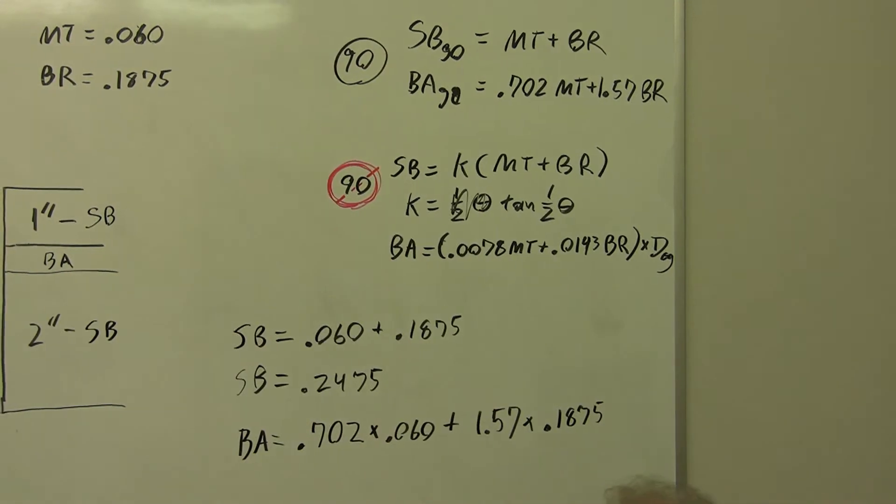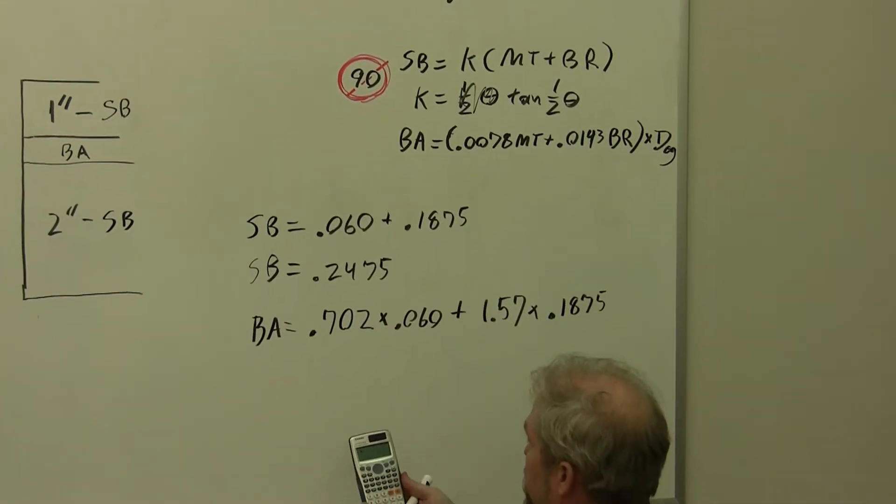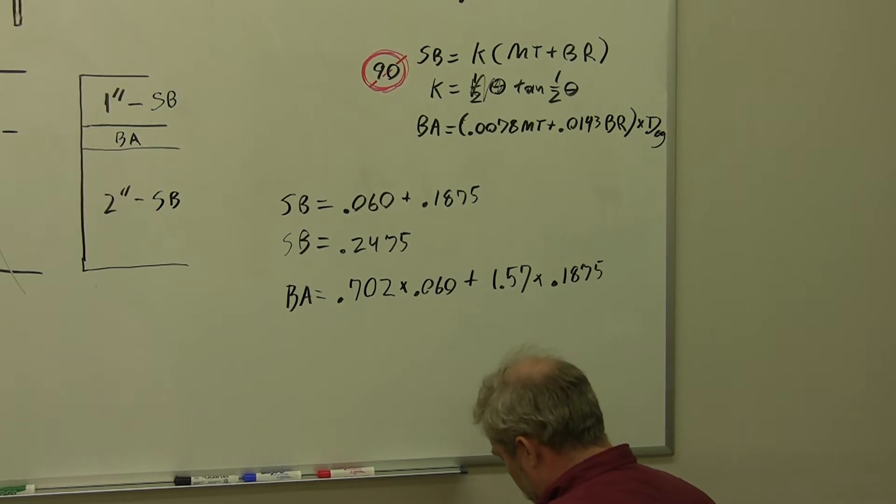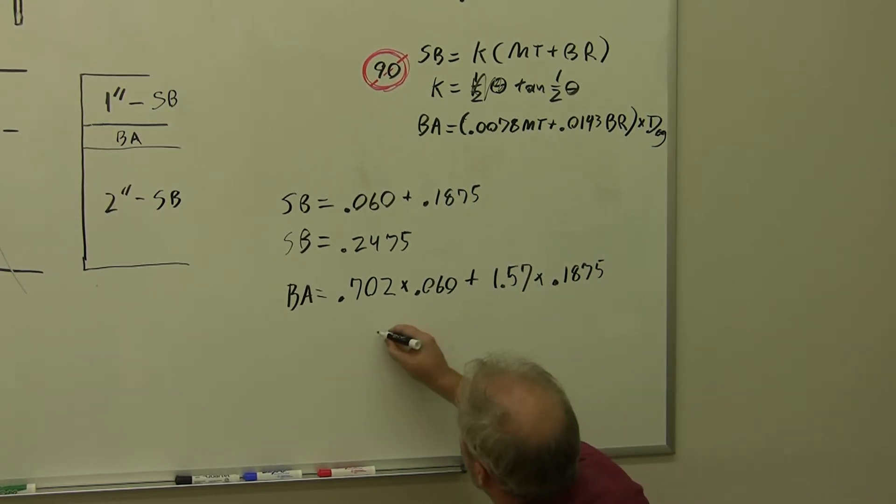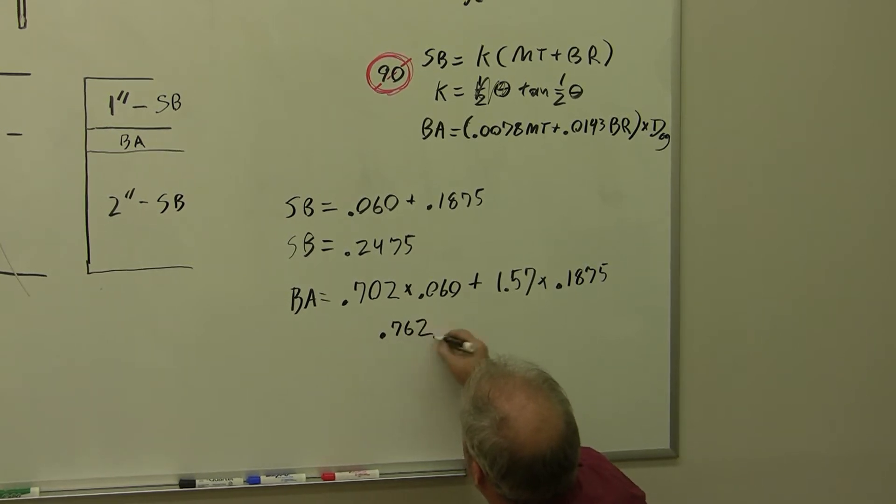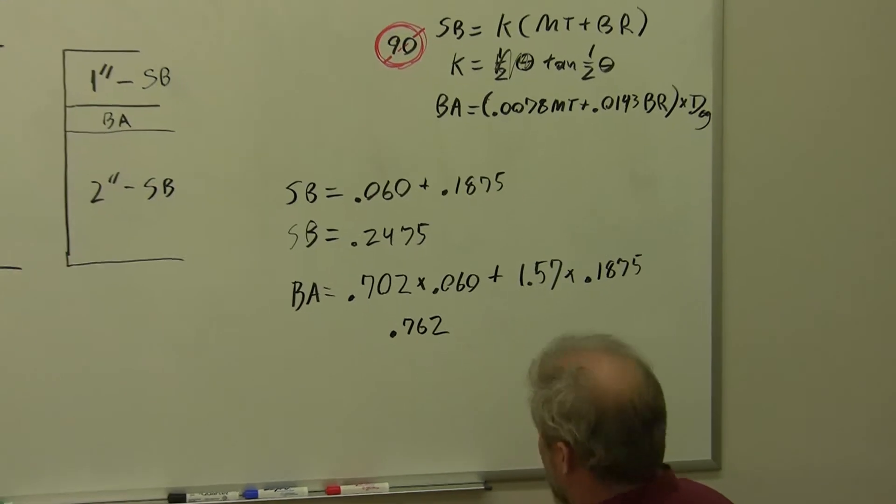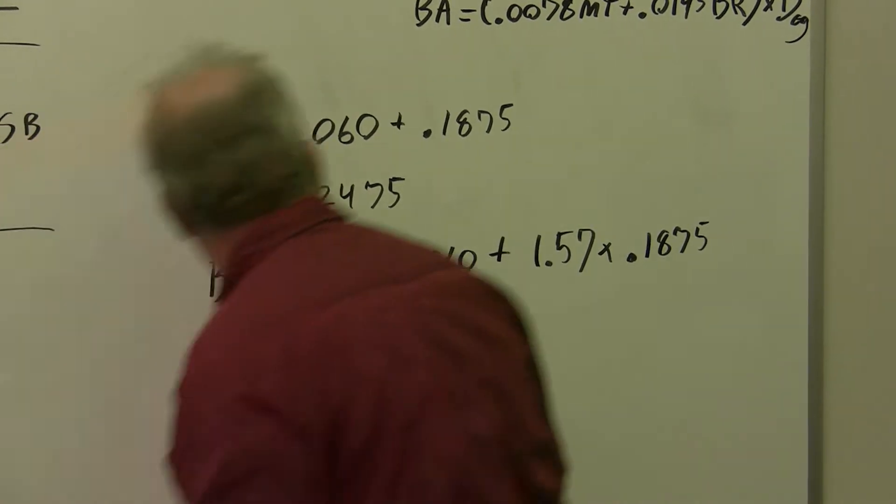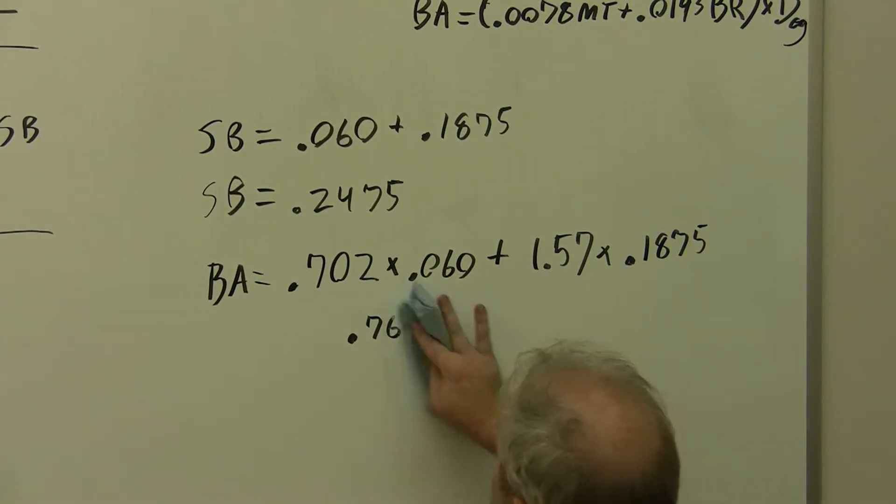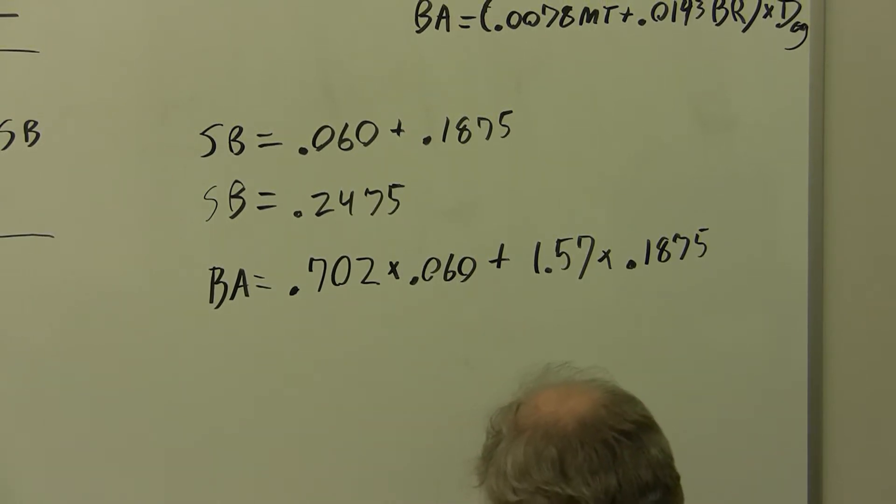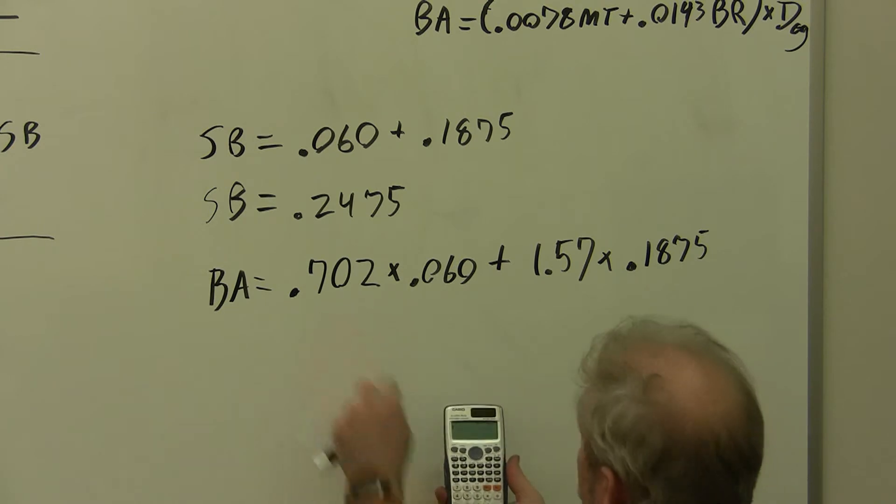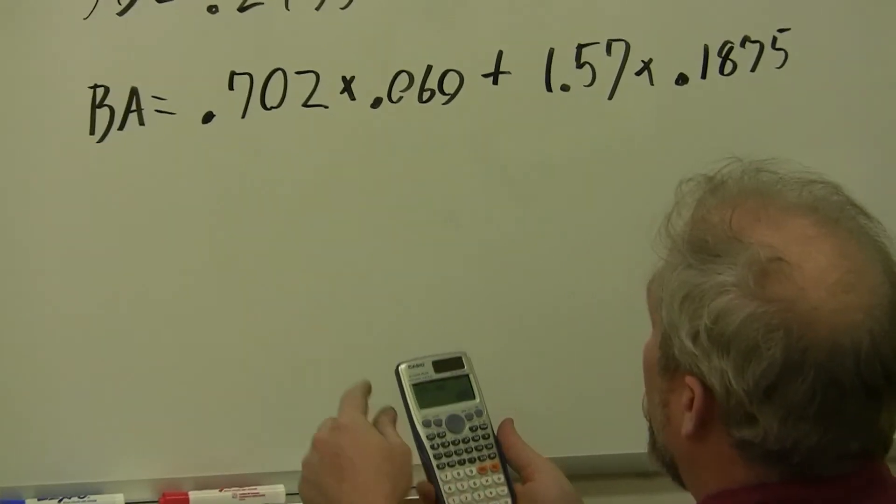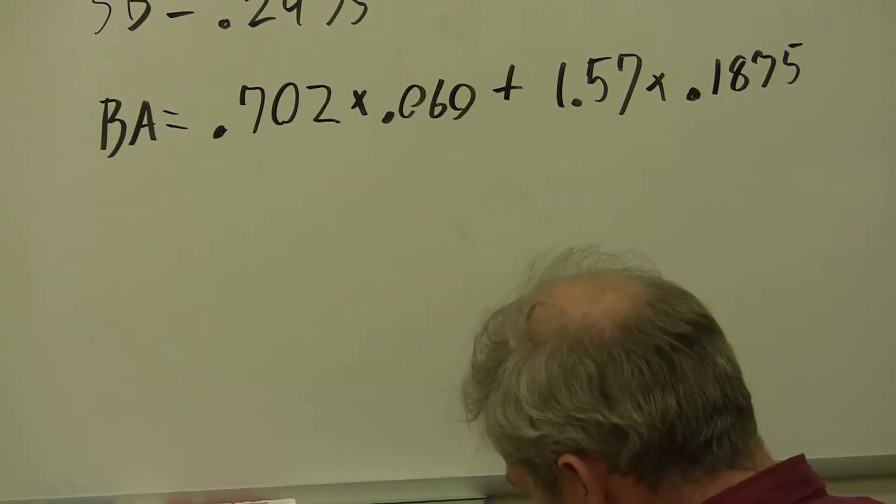Over here, 0.702 times 0.060 gives us... that looks wrong. Let me try that again. That didn't pass the realism test. Must have entered something wrong there, because two small numbers times each other should be something even smaller. Let's try again. 0.702 times 0.060. Oh yeah, that looks a lot more realistic. How about 0.042?